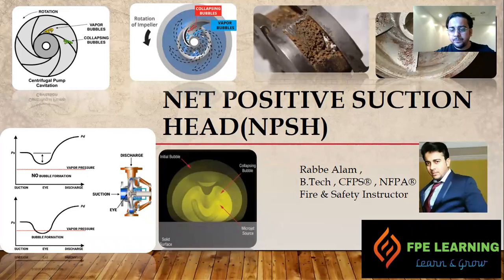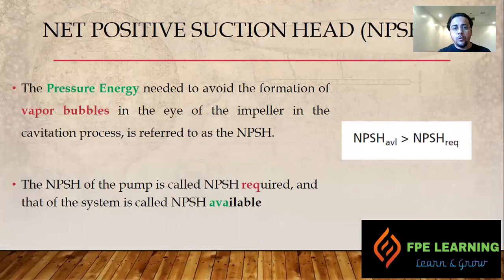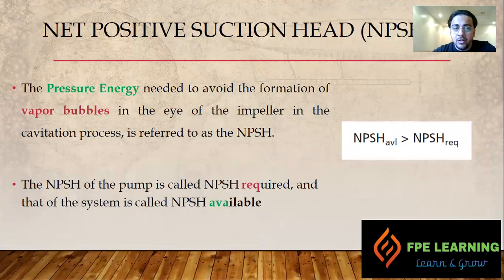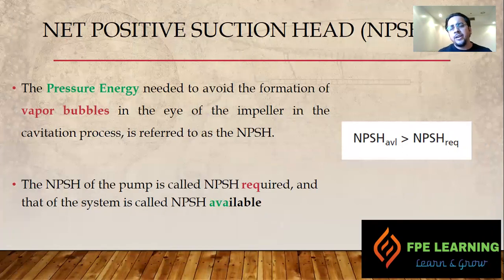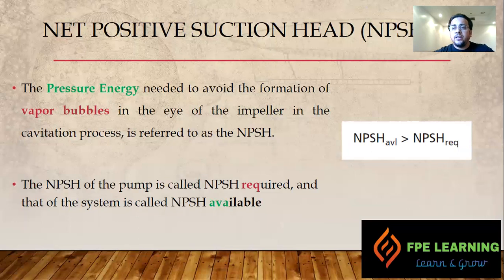Net positive suction head is the pressure energy needed to avoid the formation of vapor bubbles in the eye of the impeller during the cavitation process. We need sufficient pressure energy so that water can easily enter the impellers without the formation of cavities, which can lead to cavitation.